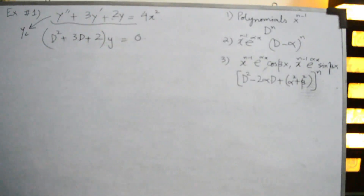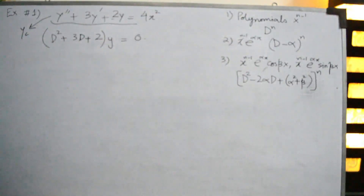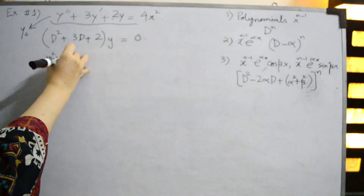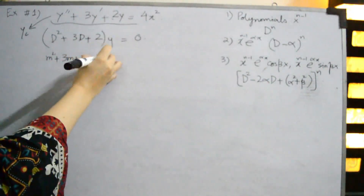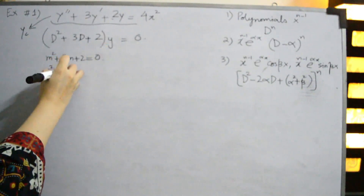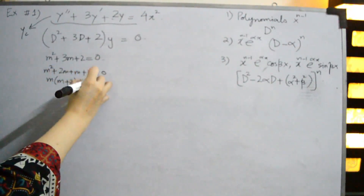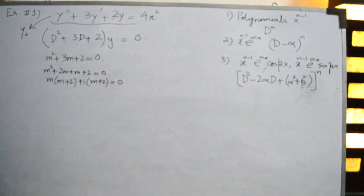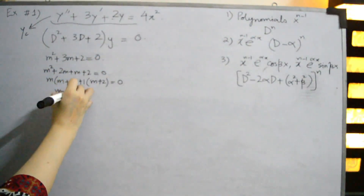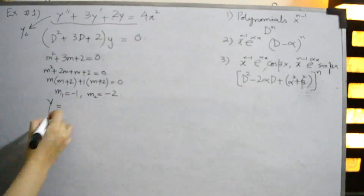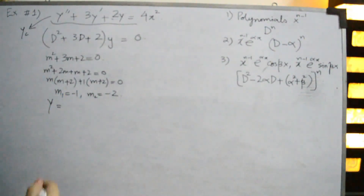For the complementary part, we solve d² + 3d + 2 = 0 using the auxiliary equation m² + 3m + 2 = 0. Factoring gives m² + 2m + m + 2 = 0, so m(m+2) + 1(m+2) = 0, yielding two roots: m₁ = -1 and m₂ = -2. These are real and distinct roots, so yc = c₁e^(-x) + c₂e^(-2x).